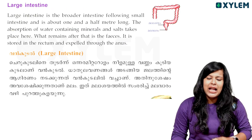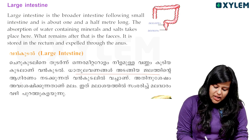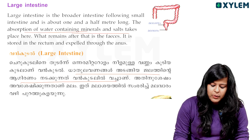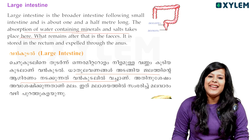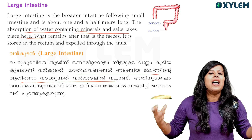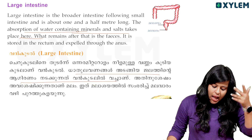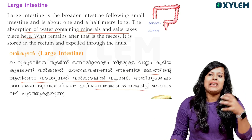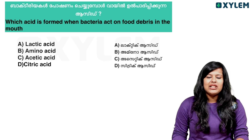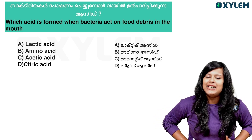Small intestine absorbs nutrients from digested food. The large intestine absorbs water and minerals. Absorption of water and minerals from the salt takes place here. If we absorb all the minerals and water, then we can absorb all the nutrients. This is the structure of the food — if we use the food, we can digest it.